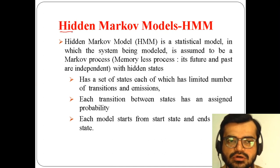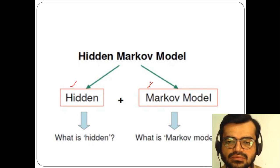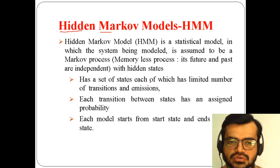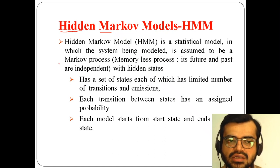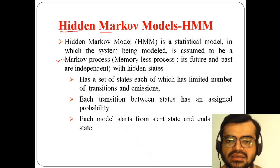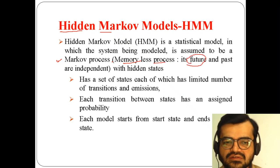If you separate 'Hidden Markov Model,' it has two parts: 'hidden' and 'Markov model.' Markov model uses the Markov process. In the Markov process we have first-order and second-order Markov assumptions. The Markov process is a memoryless process — we are predicting the future state, and if we are in the current state we should not look at past states.